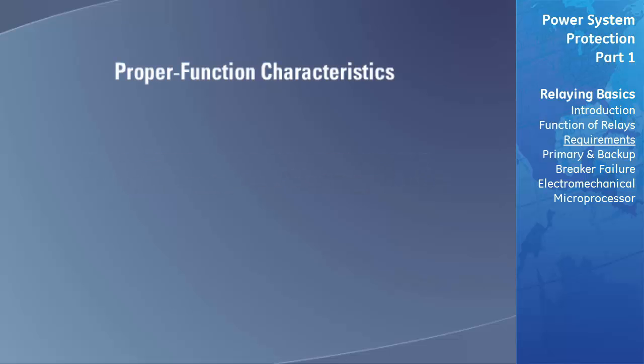There are four characteristics required by any protective relaying system to ensure that it performs its function properly. These are sensitivity, selectivity, speed, and reliability.